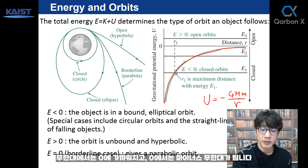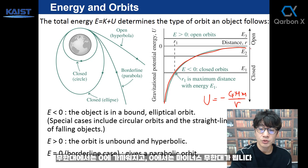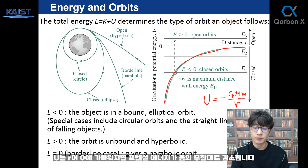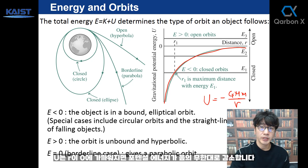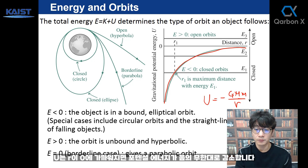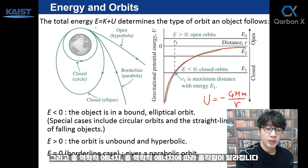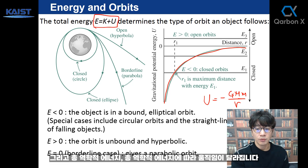It's a minus 1 over r relationship. At infinity, it approaches zero. At r approaching zero, the potential energy U goes to negative infinity. Depending on the total mechanical energy, the motion changes.